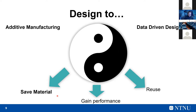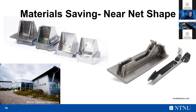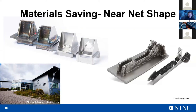In Norway, we are very lucky to have a big company in the area of material saving called Norsk Titanium, located in Hønefoss near Oslo. What they produce is near-net-shape parts — meaning you put down material that is almost as precise as the final part, and then you machine it down to the final part.